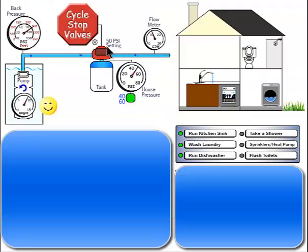This animation simply adds a cycle stop valve or CSV to the traditional system prior to the pressure tank and any water lines. Same as the old pressure tank only system, when a kitchen faucet is opened, all the water is drawn from the tank and the pressure switch starts the pump at 40 PSI.